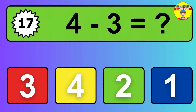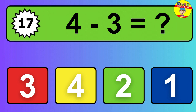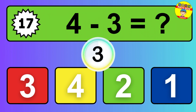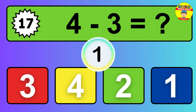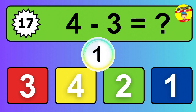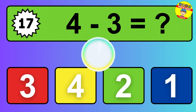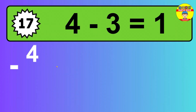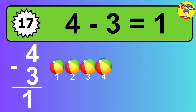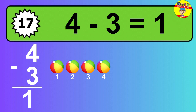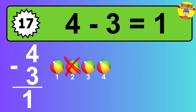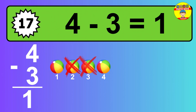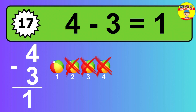Question 17. 4 minus 3 equals what? The answer is 4 minus 3 is 1. Let's count it. 1.